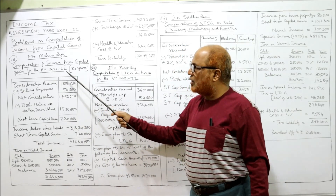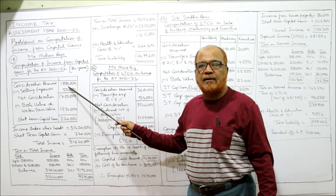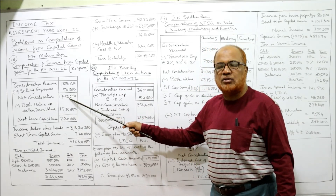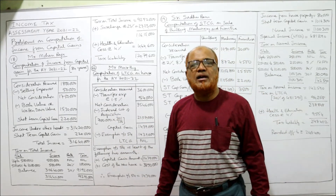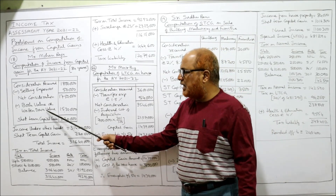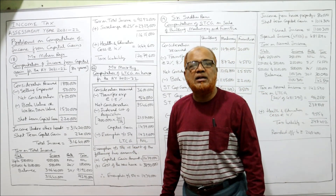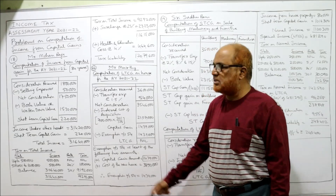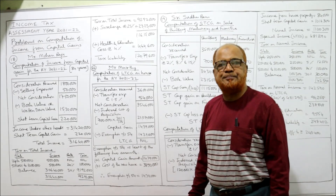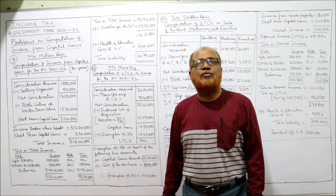Computation of income from capital gain for assessment year 2021-22: age 84 years. Consideration received 18 lakh. Less selling expenses 50 thousand. Net consideration 17 lakh 50 thousand. From this, deduct the book value of the asset — given as 15 lakh 30 thousand (book value and written down value mean the same). Short-term capital gain = 2 lakh 20 thousand. Remember: long-term capital gain is taxed at a flat rate of 20%, whereas short-term capital gain is included with other incomes and taxed on the slab system.